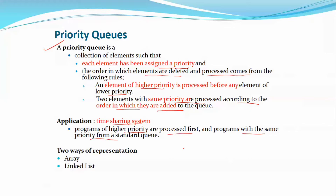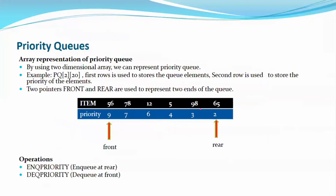Next, the different types of representation. The priority queue can be represented using different data structures. There are two types: static representation and dynamic representation. Static uses an array representation, and dynamic uses a linked list representation. So we have to look at the static array type in detail.